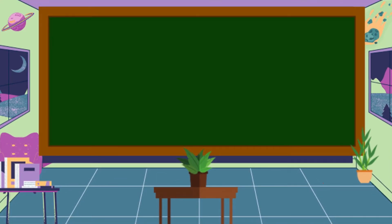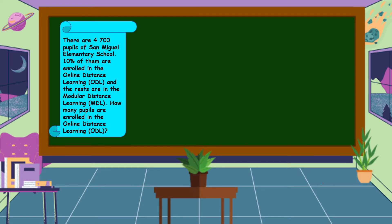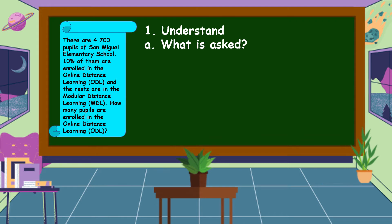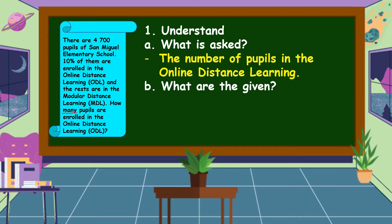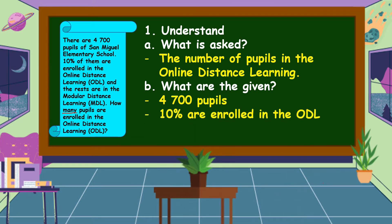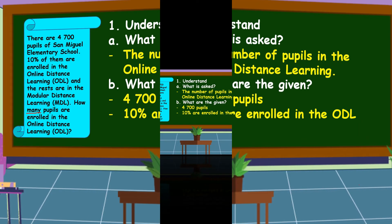To answer this problem, we're going to use the four-step plan. First, we're going to understand the problem — we should know what is asked. In this problem, it is asking for the number of pupils in the online distance learning. Second, we should know what are the given facts. In this problem, the given are 4,700 pupils and 10% are enrolled in the ODL.